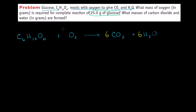Now I can balance the oxygen — I saved that for last because the oxygen molecule is the easiest to balance. On the right-hand side I have 6×2 = 12 oxygens from CO2 and another 6 oxygens from water, giving 18 oxygens total. On the left-hand side, glucose already provides 6 oxygens, so I need 12 more from O2 — meaning I put a coefficient of 6 in front of O2. Now I have 18 oxygens on both sides: 6 from glucose + 12 from 6 O2 on the left, and 12 from 6CO2 + 6 from 6H2O on the right.